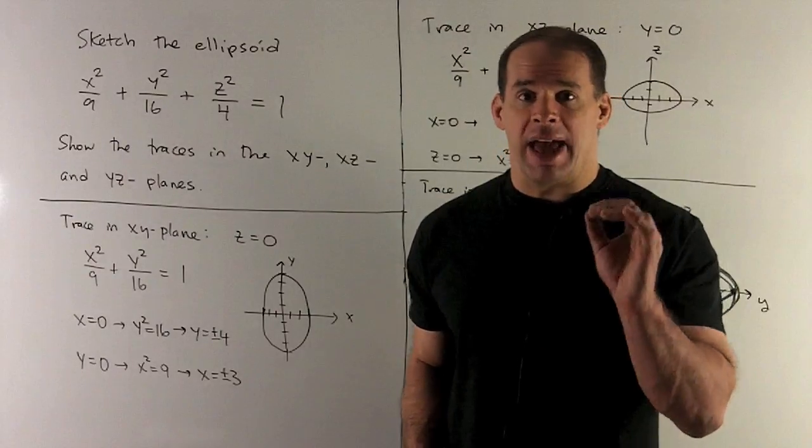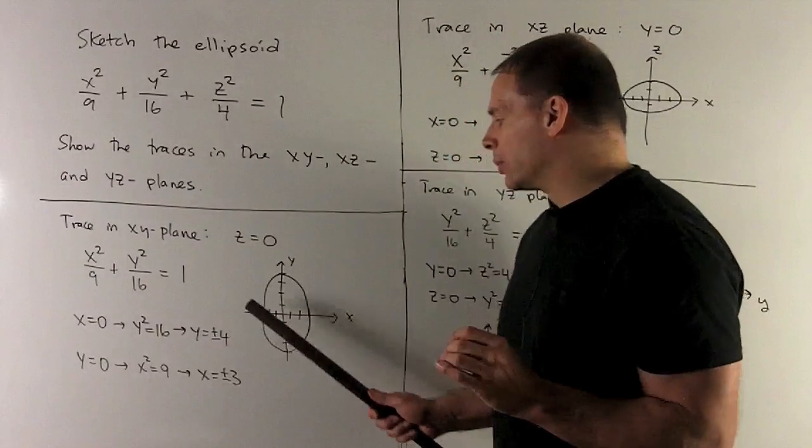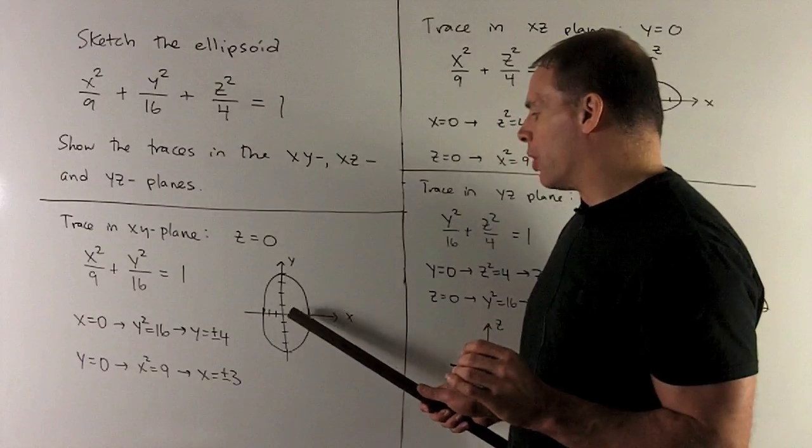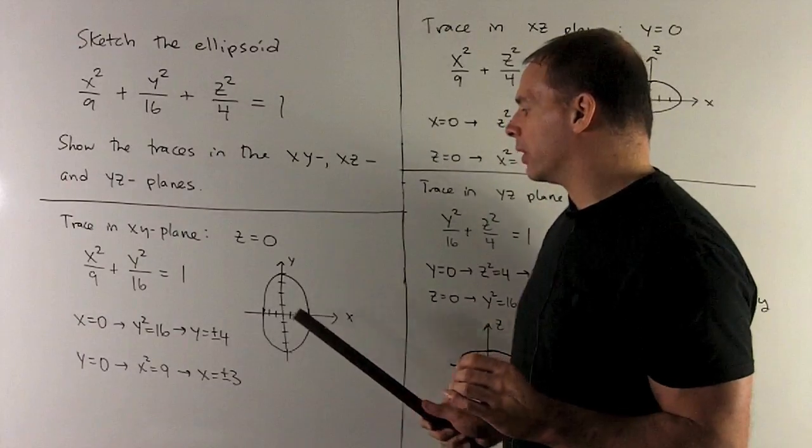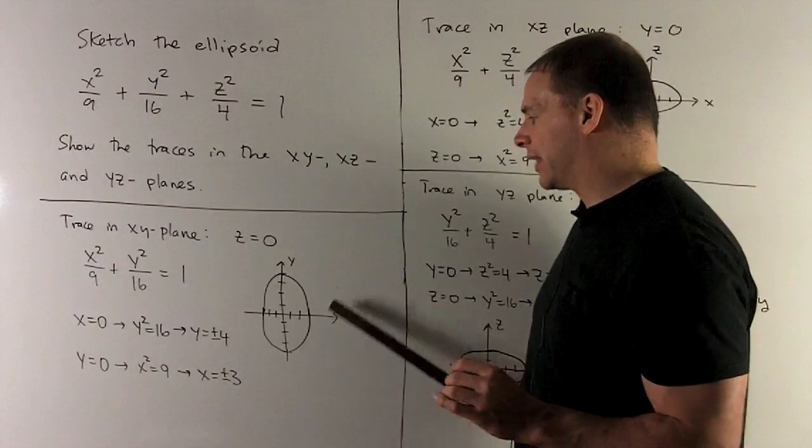If we let y be equal to zero, I'm going to get x equal to plus or minus 3. So y equals zero is the x-axis. I come over by 3, I go back by 3. I have four points, so I just connect the dots.